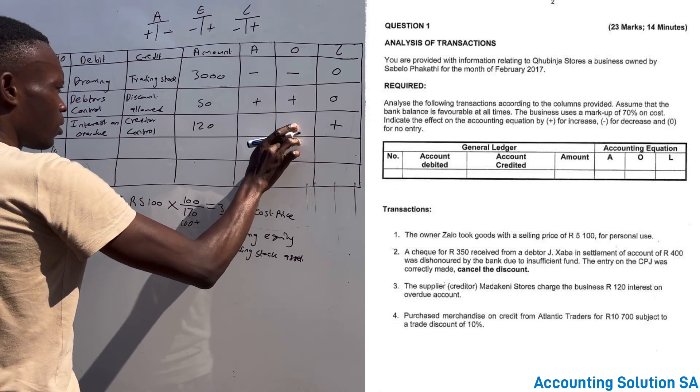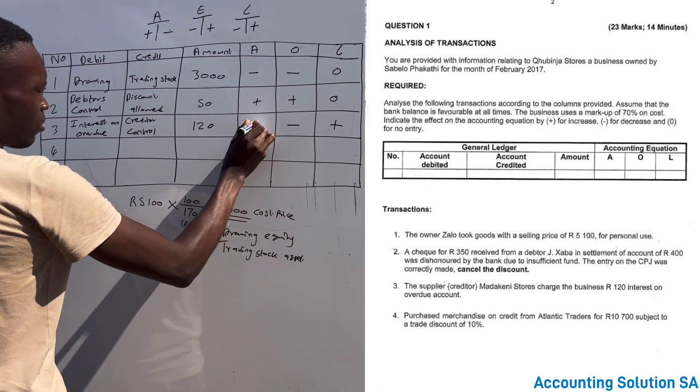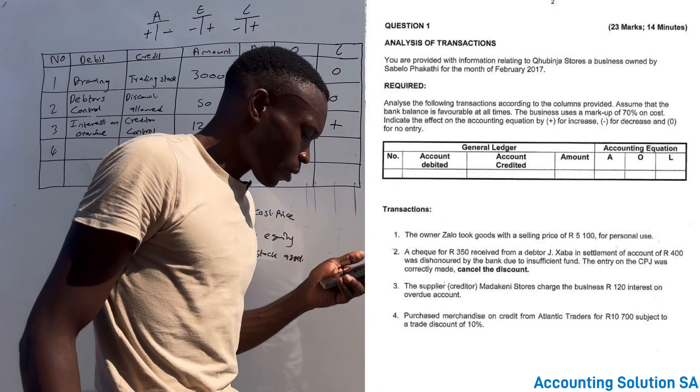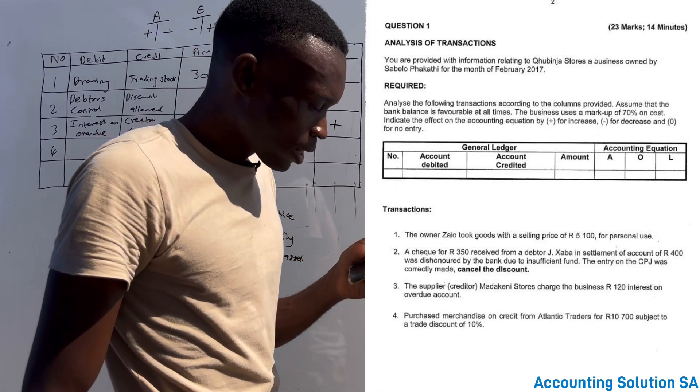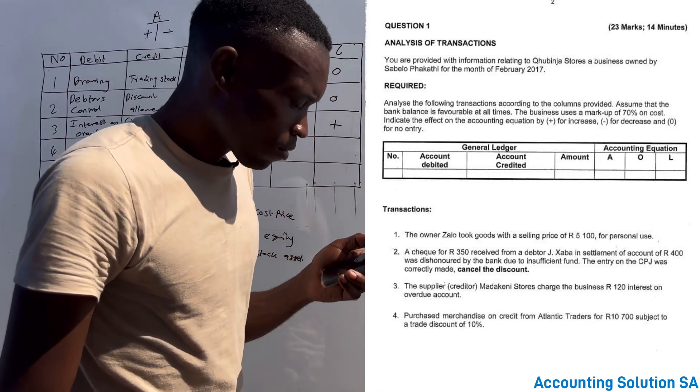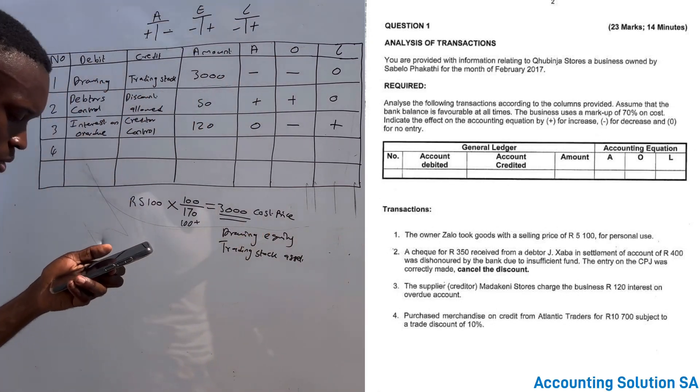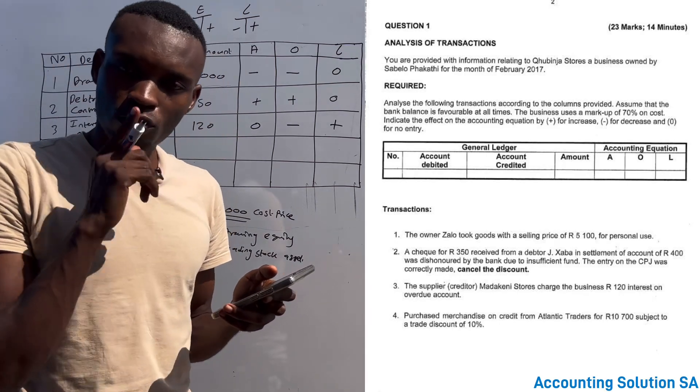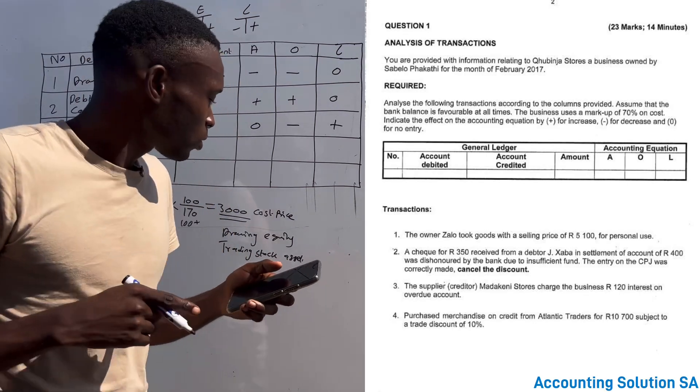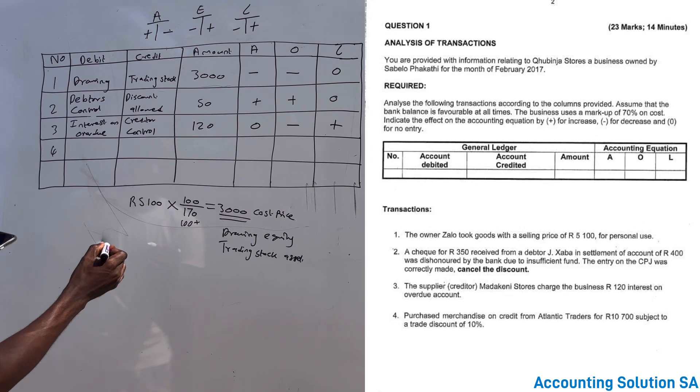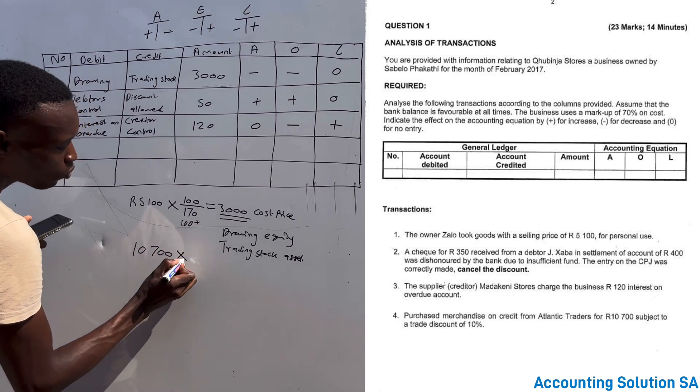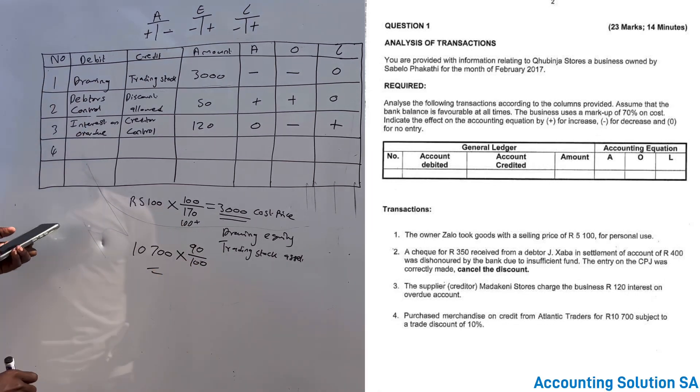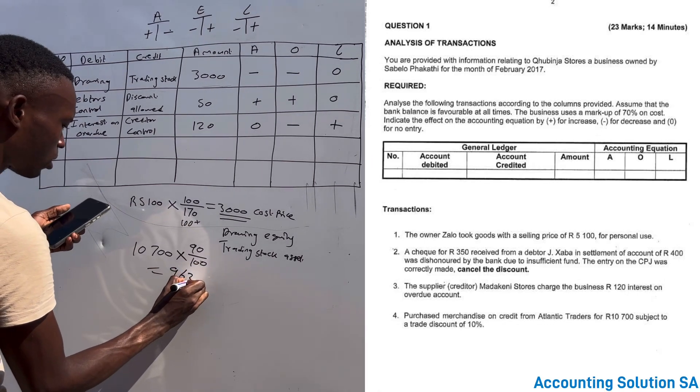The next one: purchased merchandise on credit from Atlantic Traders for 10,700 subject to a trade discount of 10 percent. We purchase for 10,700 but this is not the amount that we need to record because we need to adjust for the discount. 10,700 we are going to pay only 90 percent. 90 percent of this amount is 9,630.